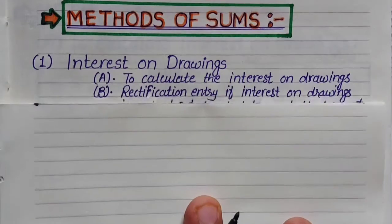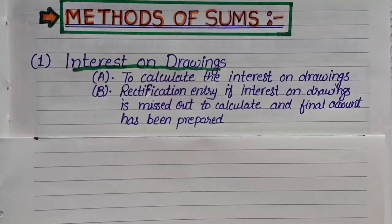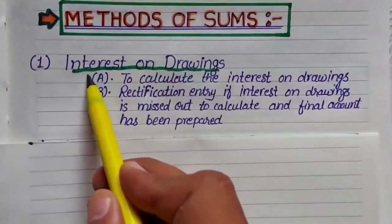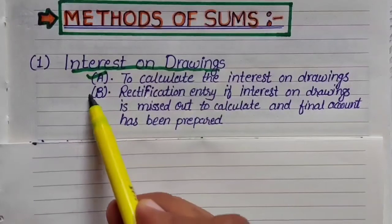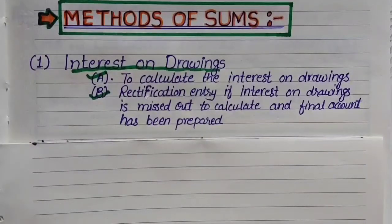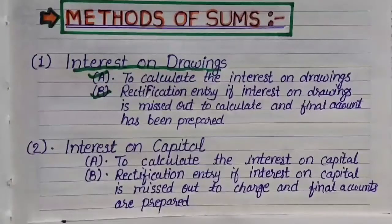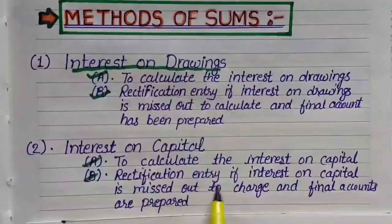The first category is Interest on Drawings — Interest on Drawings related sums. This type of sum has two sub-types in the textbook: first, to calculate Interest on Drawings; and second, a Rectification Entry if Interest on Drawings is missed out to calculate and the Final Accounts have been prepared — meaning if we have already prepared the Final Accounts and later realize we forgot to calculate Interest on Drawings, then we give a rectifying entry.